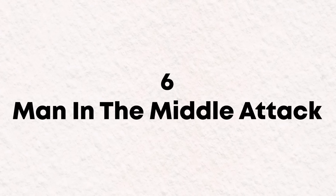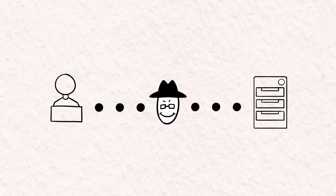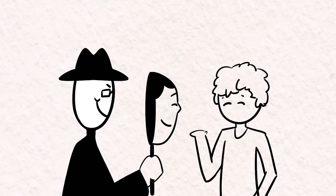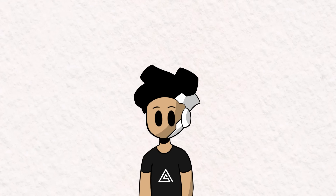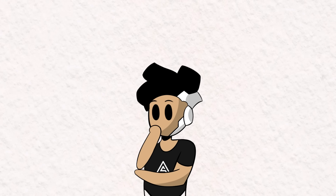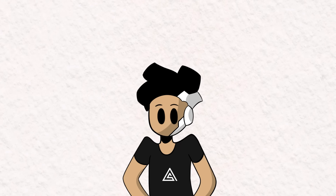Level 6: Man in the Middle Attack. A man-in-the-middle attack occurs when a hacker secretly intercepts communications between two parties who believe they are communicating directly with each other. The hacker can eavesdrop or impersonate one of the parties, making it seem like a normal exchange. These attacks come in many forms: WiFi eavesdropping, ARP poisoning, DNS spoofing, and more. You'd expect modern encryption and signed certificates to stop them, but they're very much still a thing.